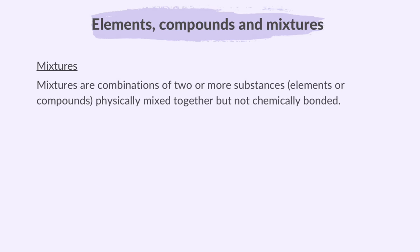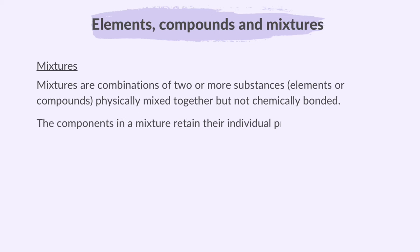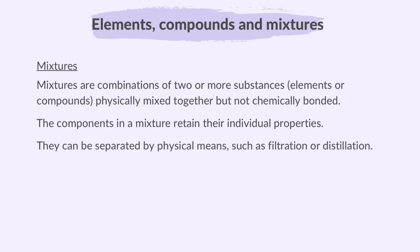Mixtures are combinations of two or more substances — that is elements or compounds — physically mixed together but not chemically bonded. The components in a mixture retain their individual properties. They can be separated by physical means such as filtration or distillation. For example, salt water: when you dissolve table salt or sodium chloride in water, you create a mixture. The salt doesn't chemically combine with water, but is dispersed throughout it.